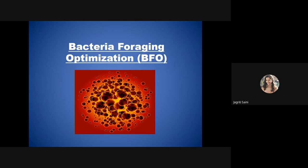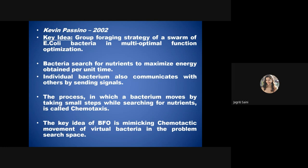Bacteria foraging optimization was developed in 2002. The key idea is the group foraging strategy of a swarm of E. coli bacteria in multi-optimal function optimization. Bacteria search for nutrients to maximize energy obtained per unit time, and individual bacteria communicate with others by sending signals about the best energy source. The movement of bacteria by taking small steps while searching for nutrients is called chemotaxis, and the key idea is to mimic this chemotactic movement in the problem search space.